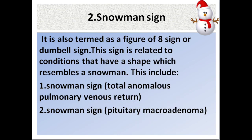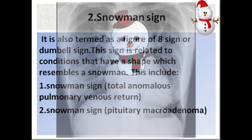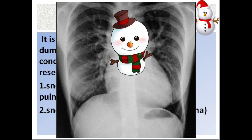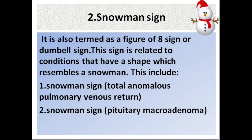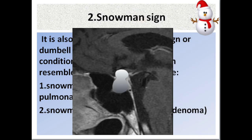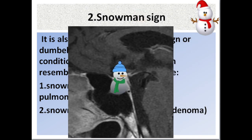The second sign is the snowman sign, also termed the figure-of-eight sign or dumbbell sign. This sign is related to conditions that have a shape which resembles a snowman. These include: one, snowman sign in total anomalous pulmonary venous return; two, snowman sign seen in pituitary macroadenoma.